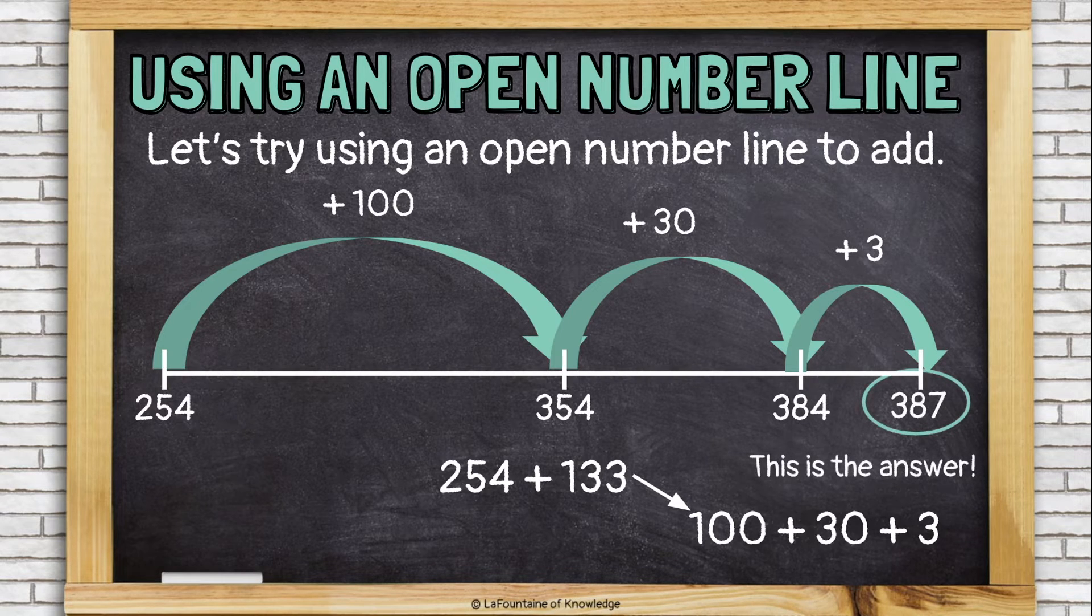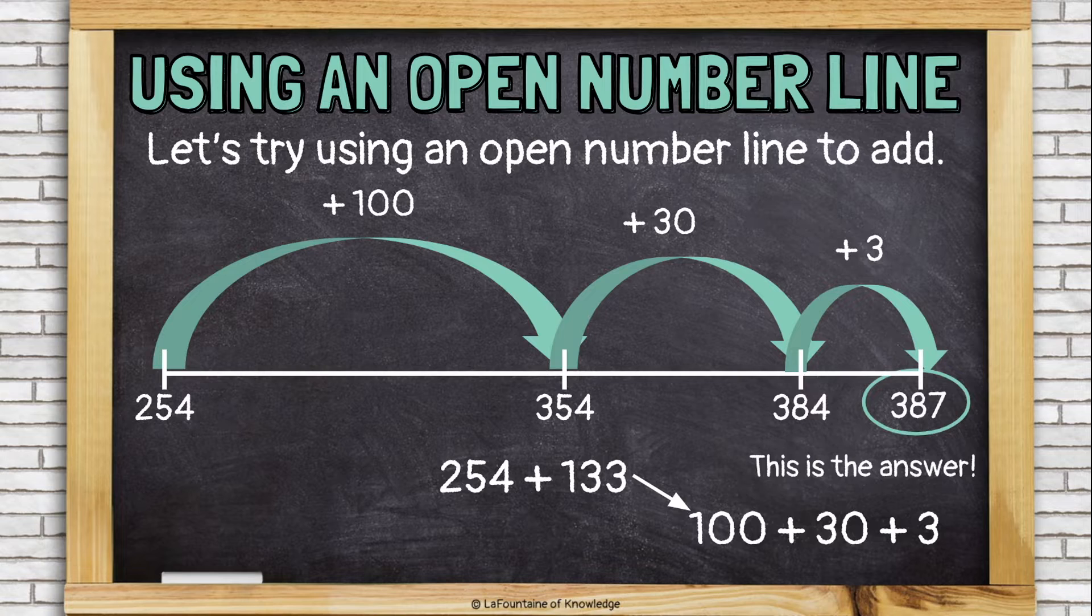And this is my answer. 254 plus 133 is 387.